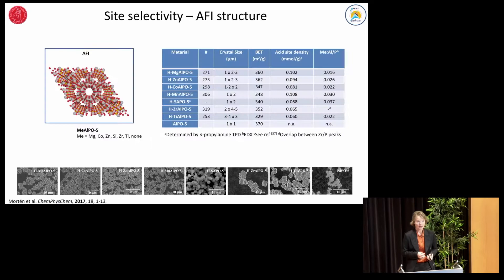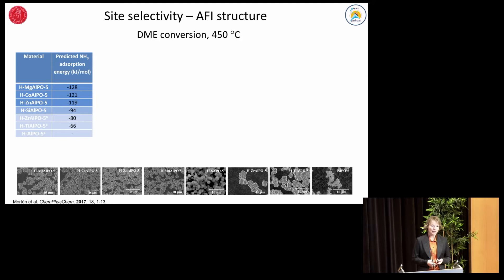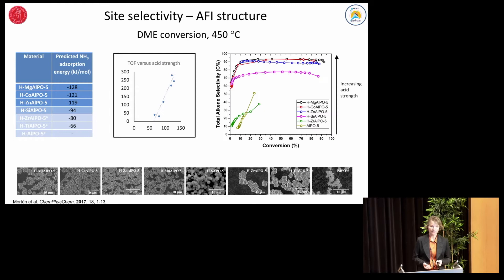I will start with an example of site selectivity in zeolites and zeotypes. This example shows the characteristics of a series of MAPO materials with AFI topology — a large pore topology with straight, one-dimensional ten-ring channels, where all formed molecules are able to diffuse through the pores. The only parameter that varies significantly between the materials is the heteroatom. Heteroatoms that represent higher Brønsted acid strength lead to higher turnover frequency and to higher alkene selectivity, clearly demonstrating site selectivity.